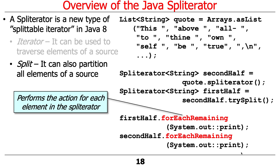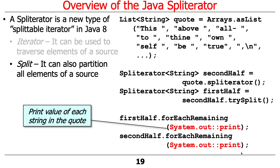Now that we have two spliterators — one covering the first half and one covering the second half — we call methods that perform actions for each element. For each element in the first half and then each element in the second half, we print the value using the print method reference on the System.out object. That's the basic idea of spliterators. You'll have to figure out how to make it work for your array spliterator, but it's not too different from the pseudocode I just gave you.